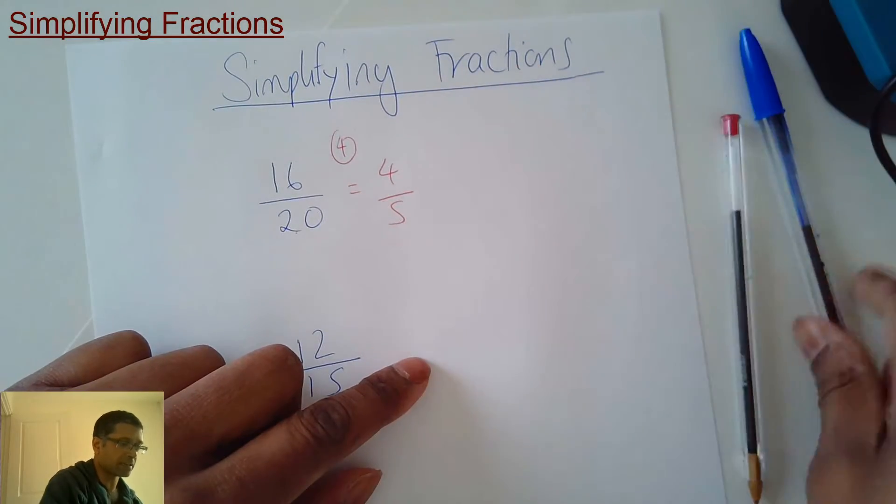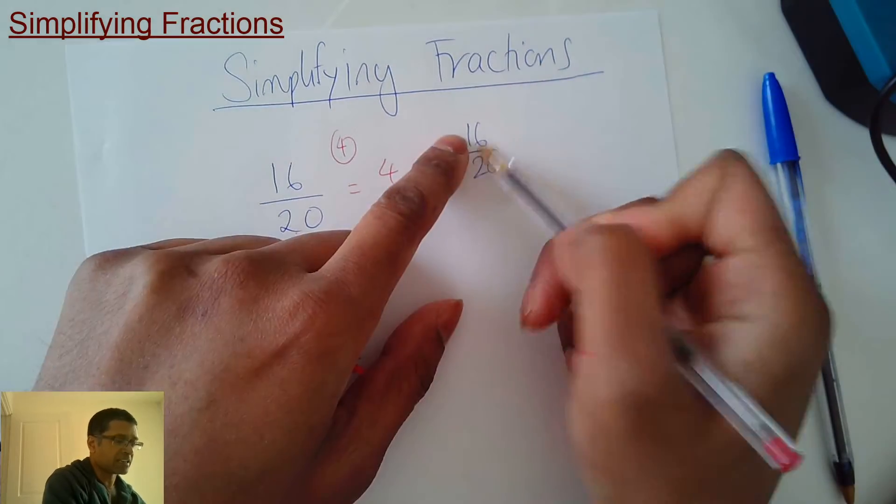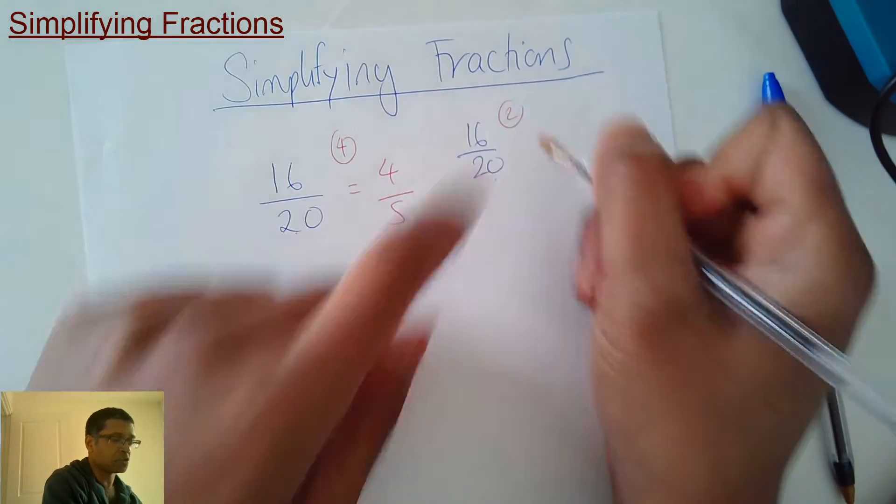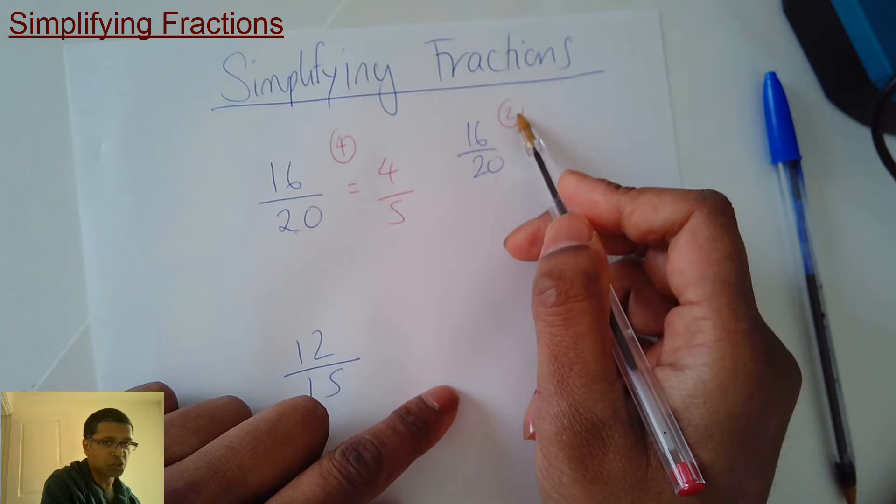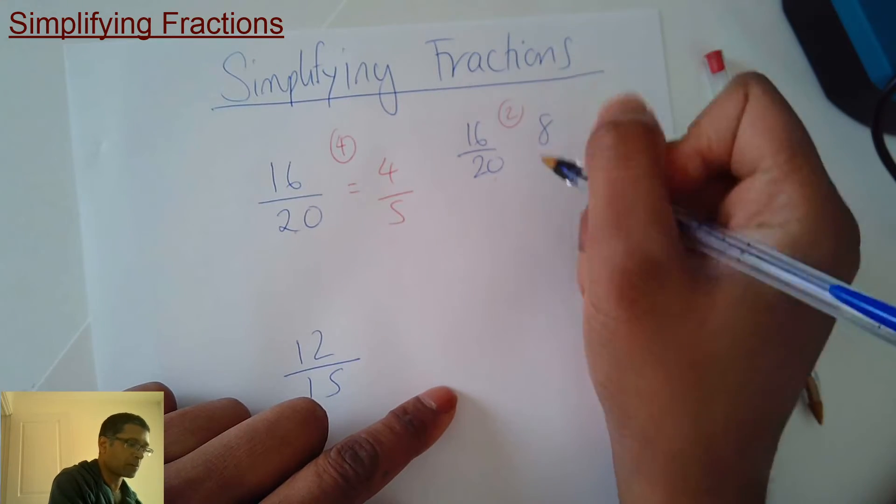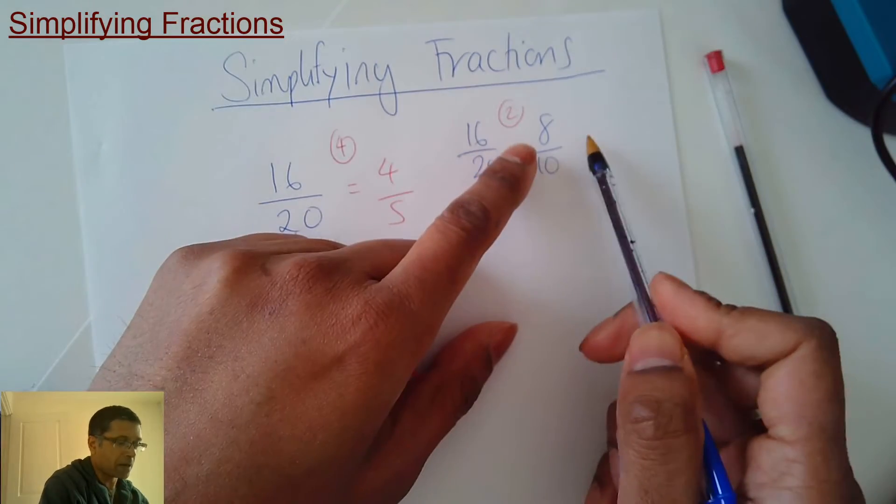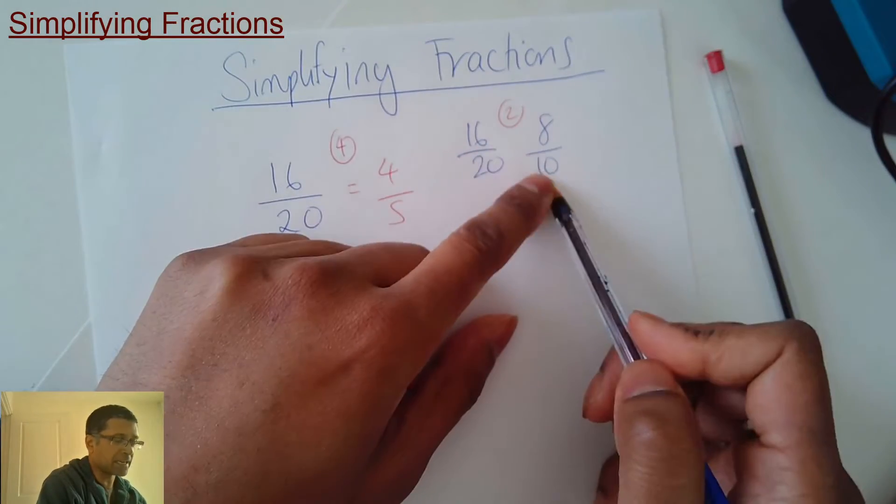But had you done it this way instead, let's say you had 16 and 20 and you said, oh, 16 is in the 2 times table, 20 is in the 2 times table. Then you could have done 16 divided by 2 to give you 8, and 20 divided by 2 to give you 10. But there is a number other than 1 that goes into 8 and 10.